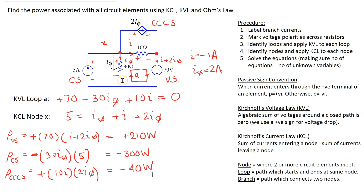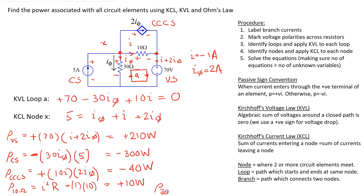The two remaining elements are the resistors. Resistors always dissipate power, so we use the formula I²R. For the 10-ohm resistor, the power is 1² × 10 = plus 10 watts. For the 30-ohm resistor the current is I_phi, so the power is I_phi² × R, and substituting the values gives 120 watts.